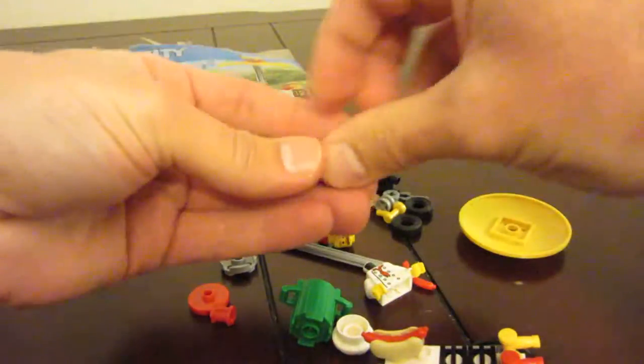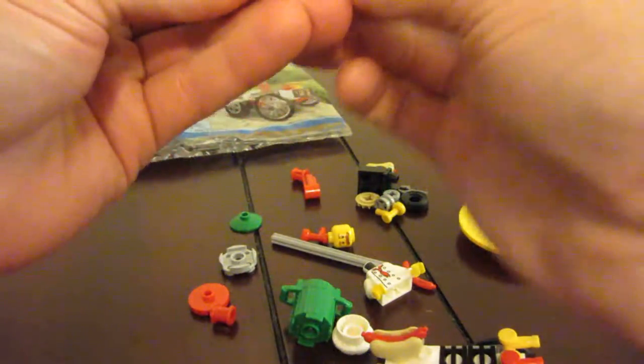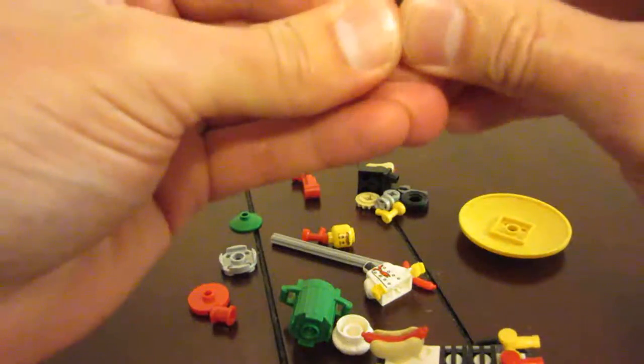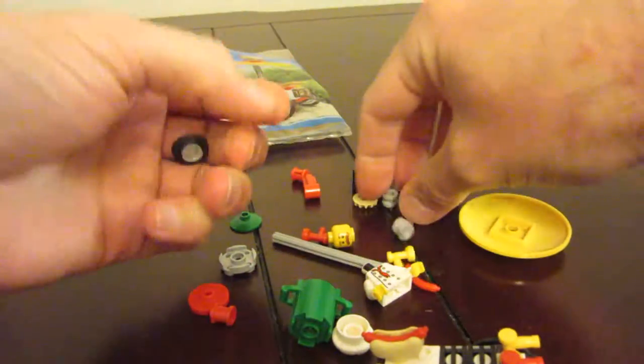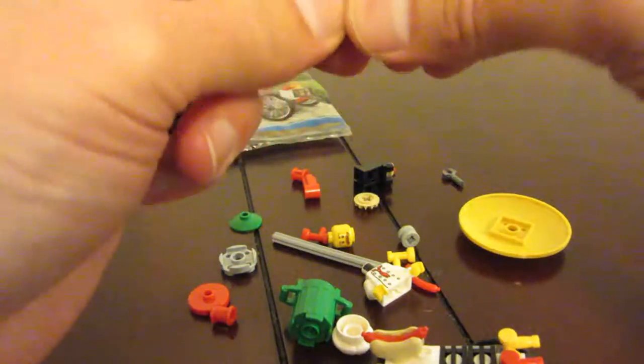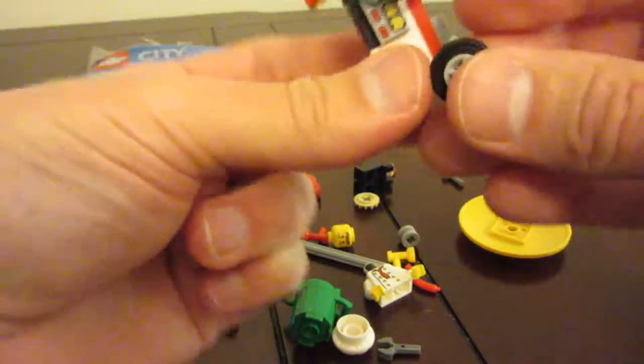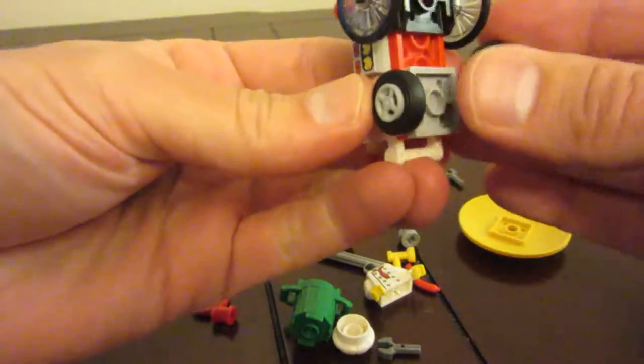Then we take for the front wheels, we've got these smaller tires on these smaller wheels, and those go in like that. So those go on the front of the hot dog cart, like so.